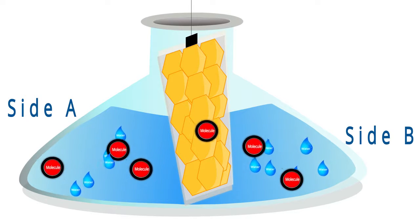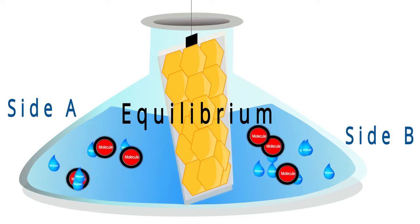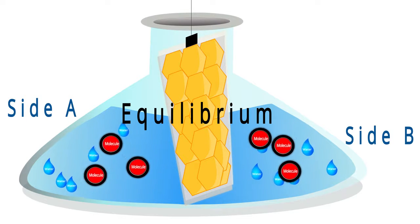The particles continue to move back and forth between side A and B until they come to equilibrium. That is, they move until the number of particles on each side is equal.